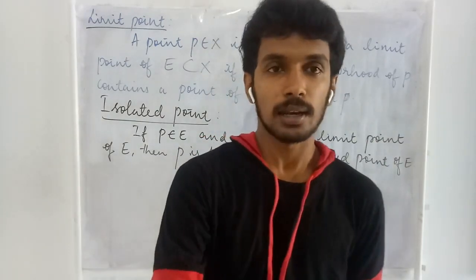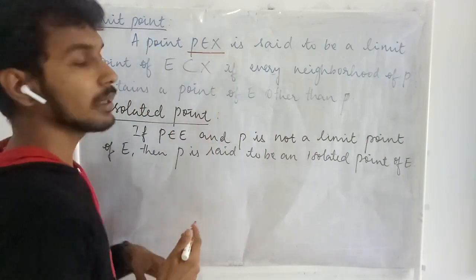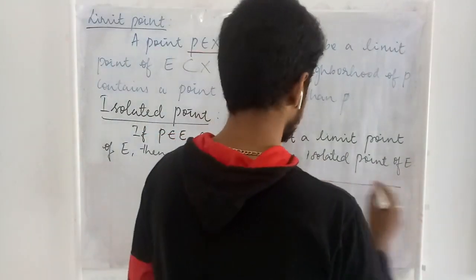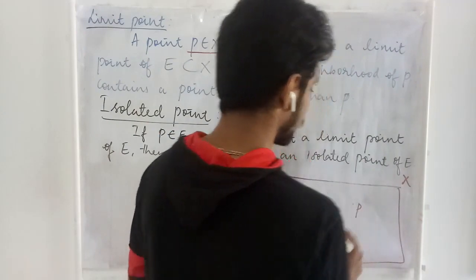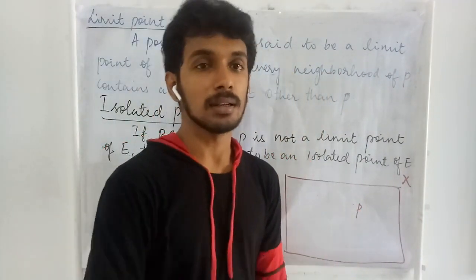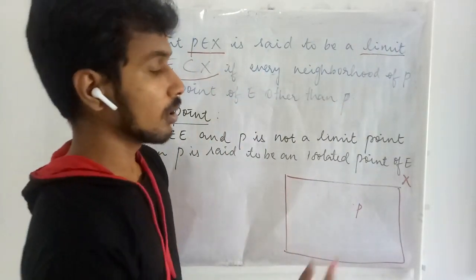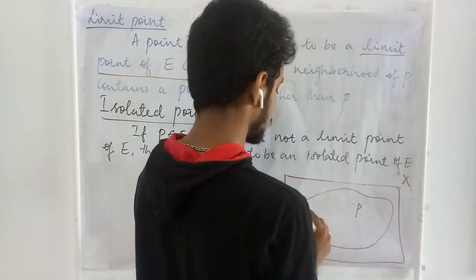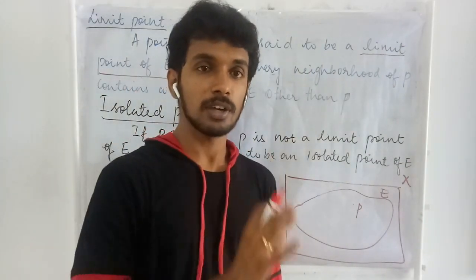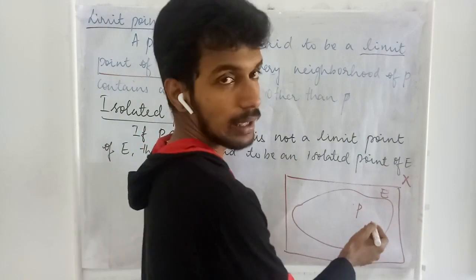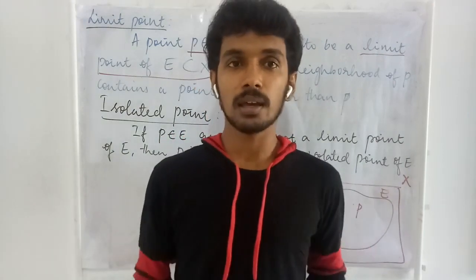Let us get into the lecture. Here, a limit point. In order to define a limit point, we are taking a point from the metric space X. In a metric space, we may take any point P and this P may be called as a limit point of E. So in the metric space we will also have to consider some subset E. But from the definition, we do not have any guarantee that this P lies inside E, lies outside E, or lies on the boundary of E. We do not have any information about it.